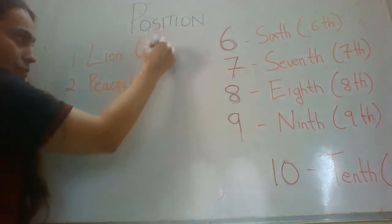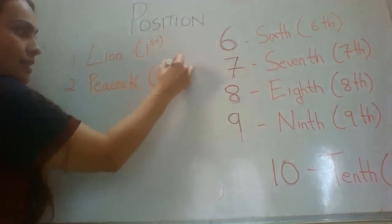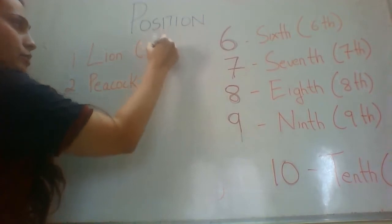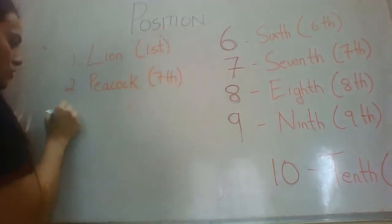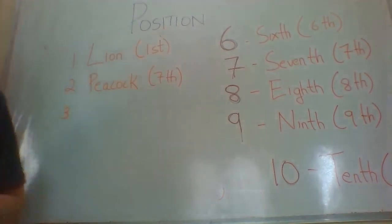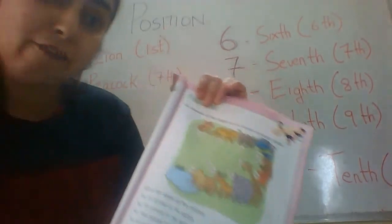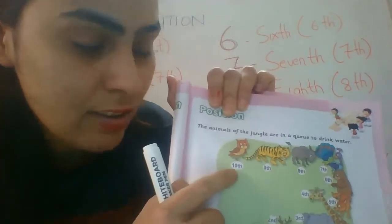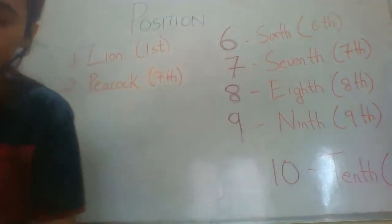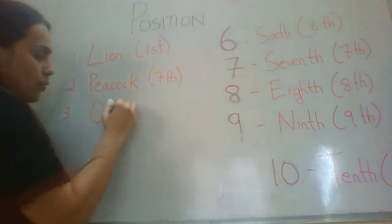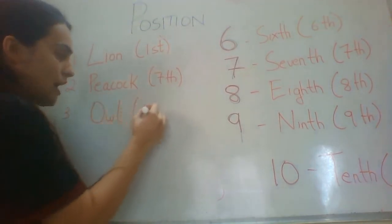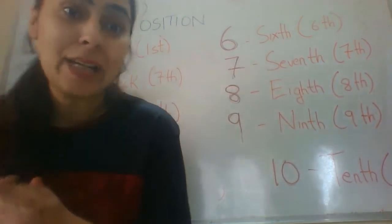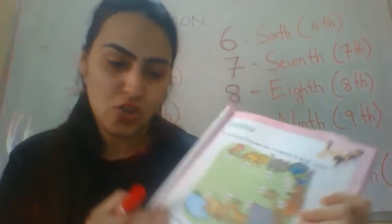Lion is at the first position. Now the tenth animal — the number ten animal — is an owl. So we are going to write that owl is on the tenth position.